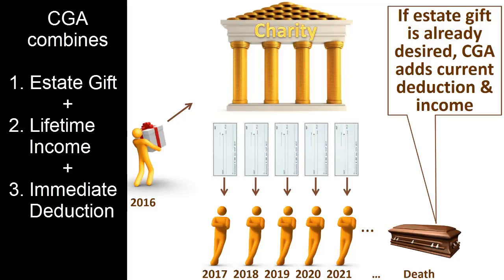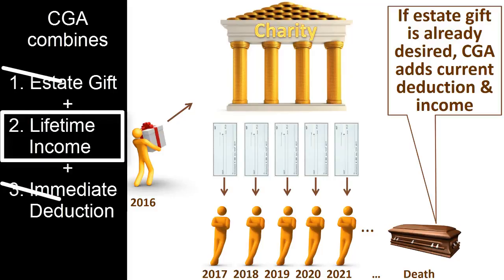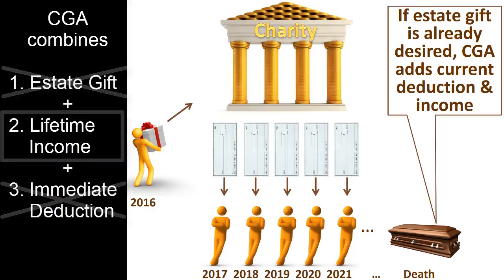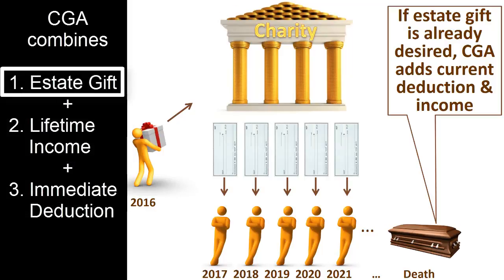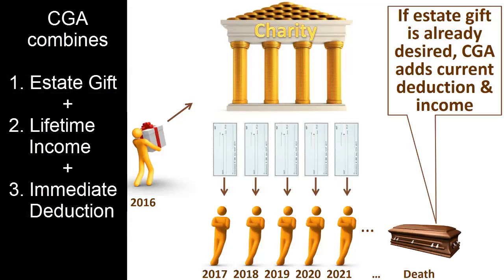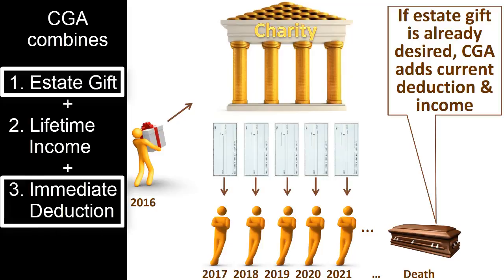Simply purchasing an immediate annuity from a life insurance company provides lifetime payments but doesn't accomplish the donor's charitable goals. Similarly, writing a charity into one's will generates no income tax deductions. But by converting that revocable bequest decision into an irrevocable charitable gift annuity, the donor benefits the charity and generates immediate income tax benefits and lifetime income, making the gift annuity an attractive option.